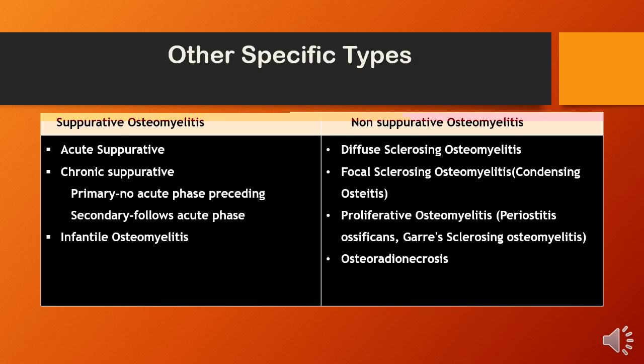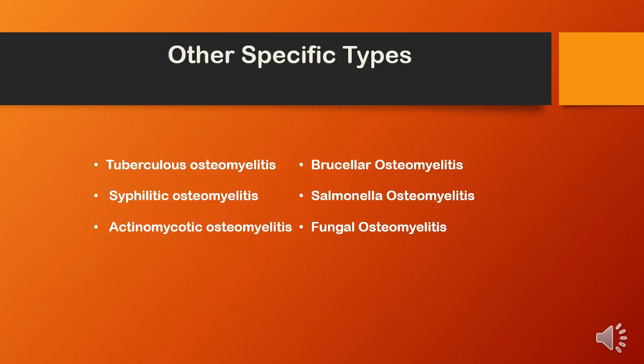Coming to other specific types of osteomyelitis, these include tuberculous osteomyelitis, brucellar osteomyelitis, syphilitic osteomyelitis, salmonella osteomyelitis, actinomycotic osteomyelitis, and fungal osteomyelitis.